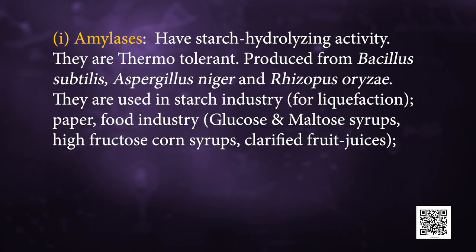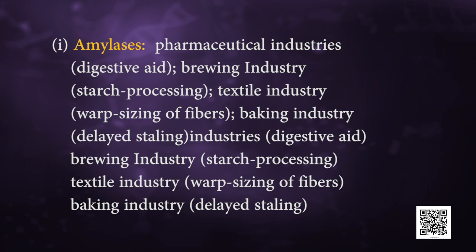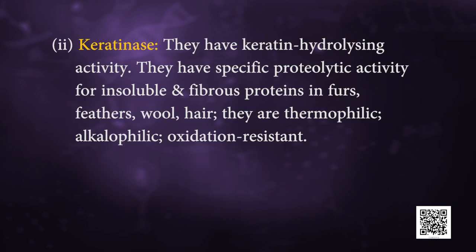Some of the microbial enzymes useful to humans: first is amylases. They have starch hydrolysing activity. They are thermotolerant, produced from Bacillus subtilis, Aspergillus niger and Rhizopus oryzae. They are used in the starch industry for liquefaction, paper industry, food industry for glucose and maltose syrups, high fructose corn syrups, clarified fruit juices, pharmaceutical industries for digestive aid, brewing industry for starch processing, textile industry for warp sizing of fibers, and baking industry for delayed staling.